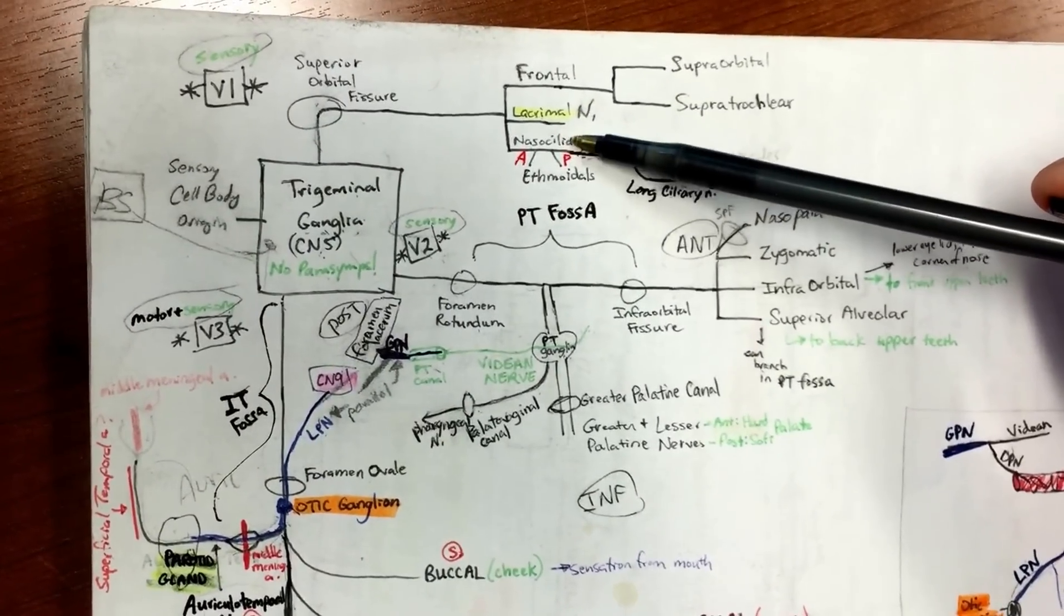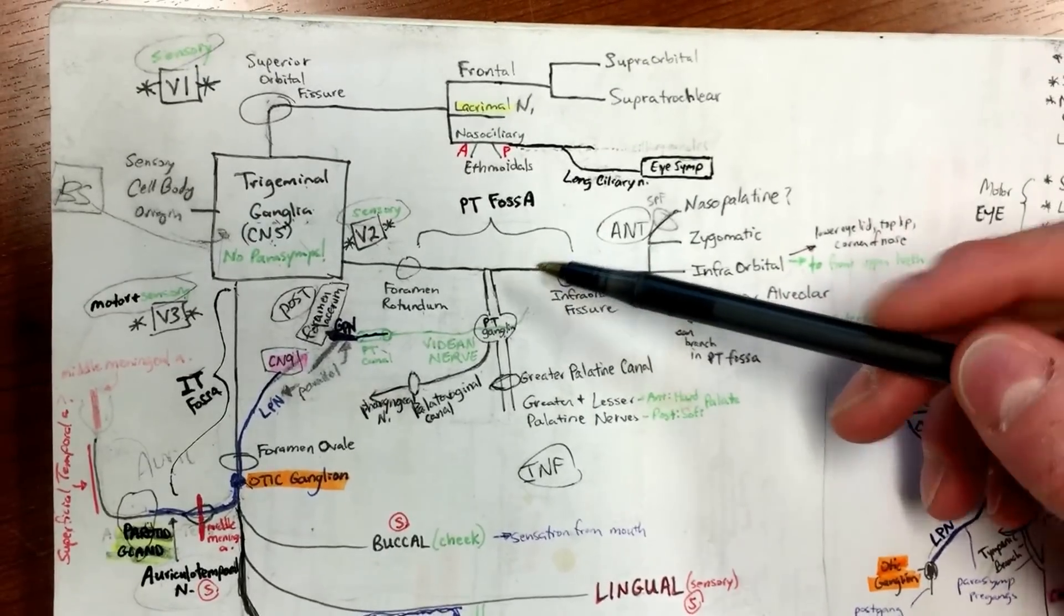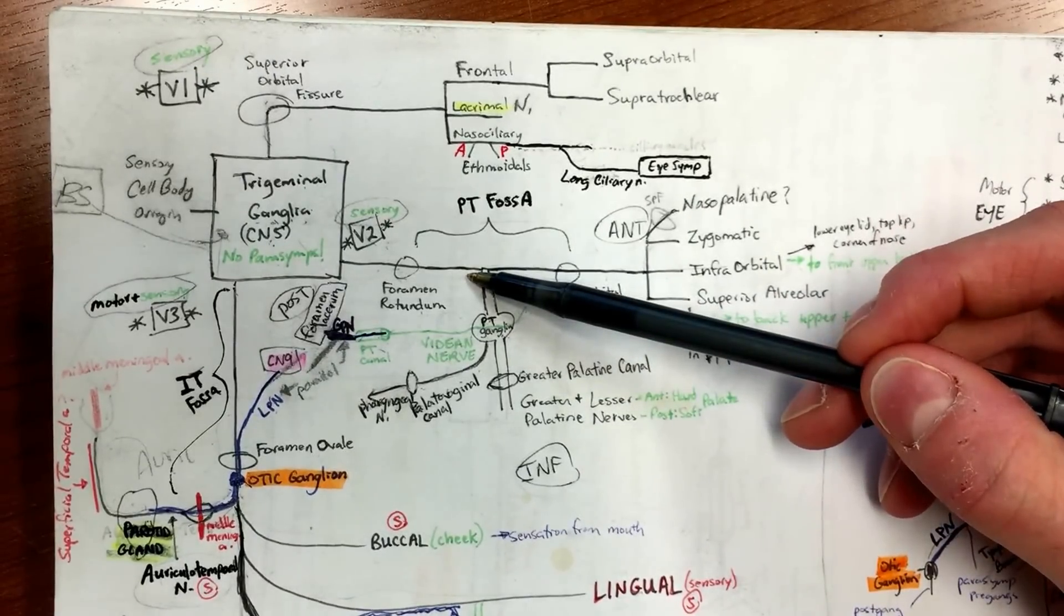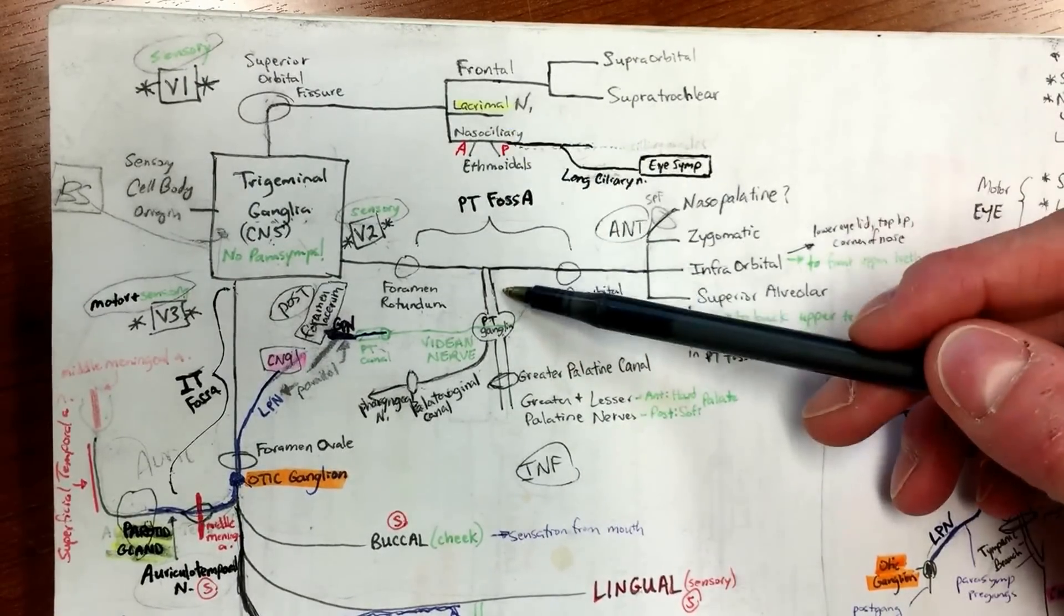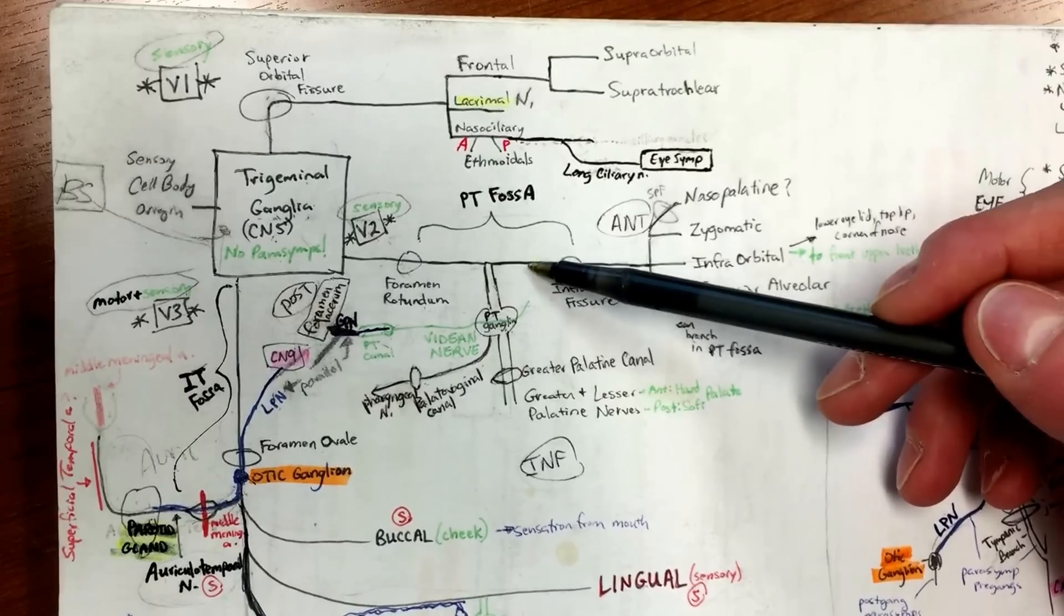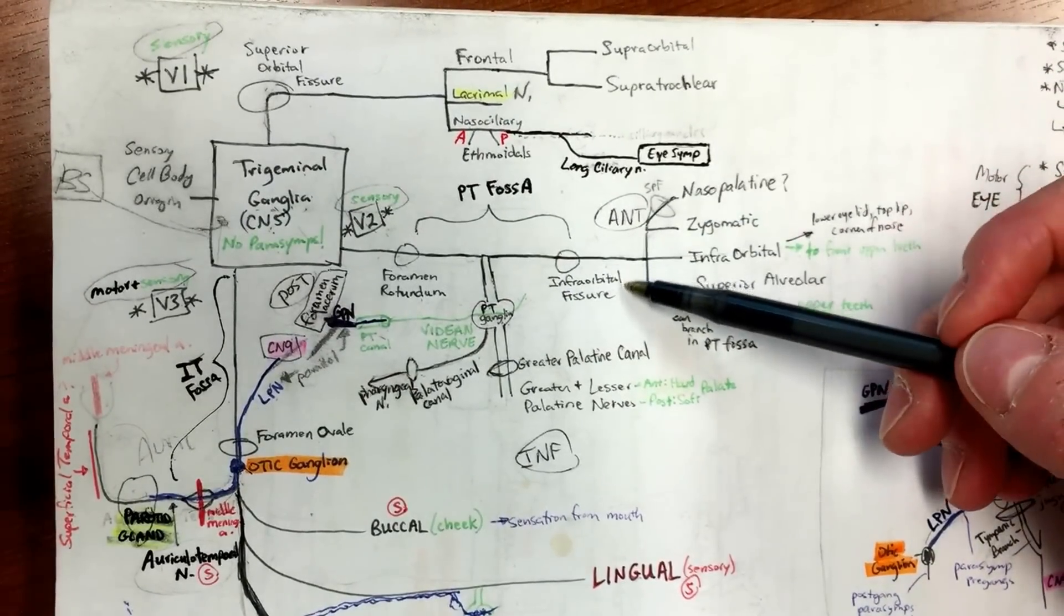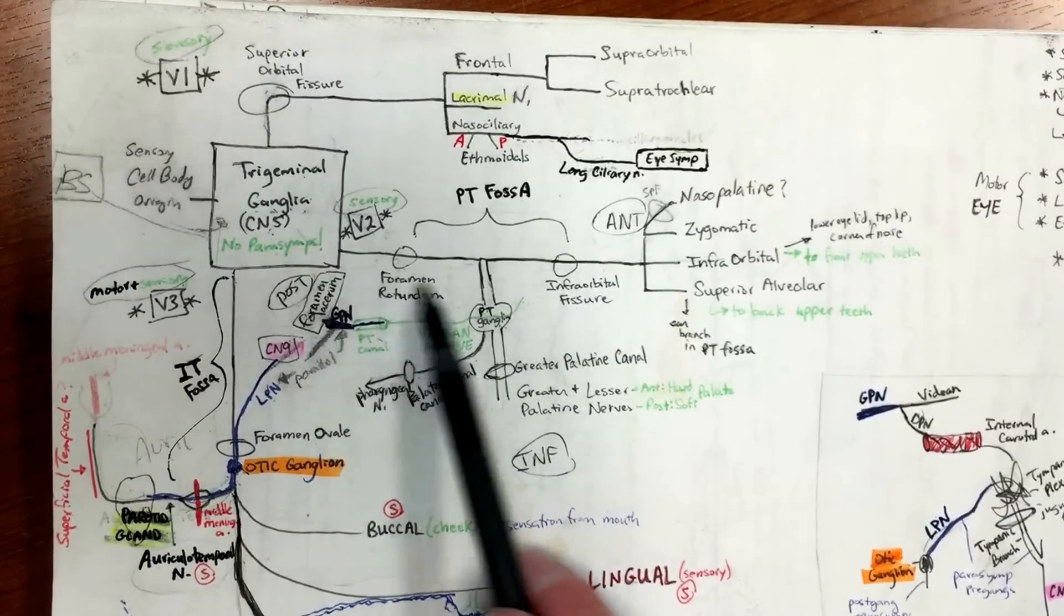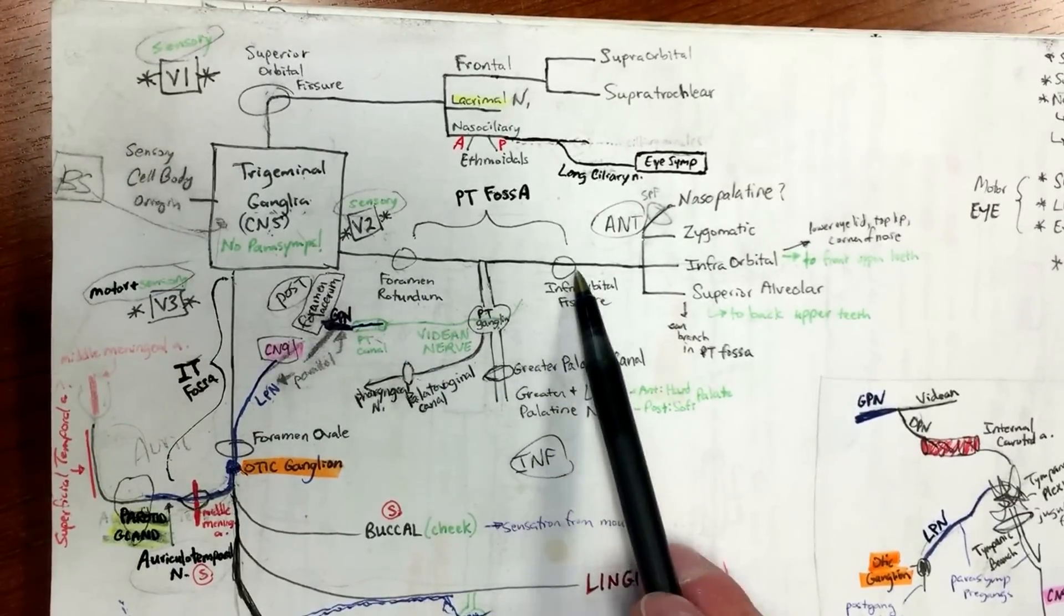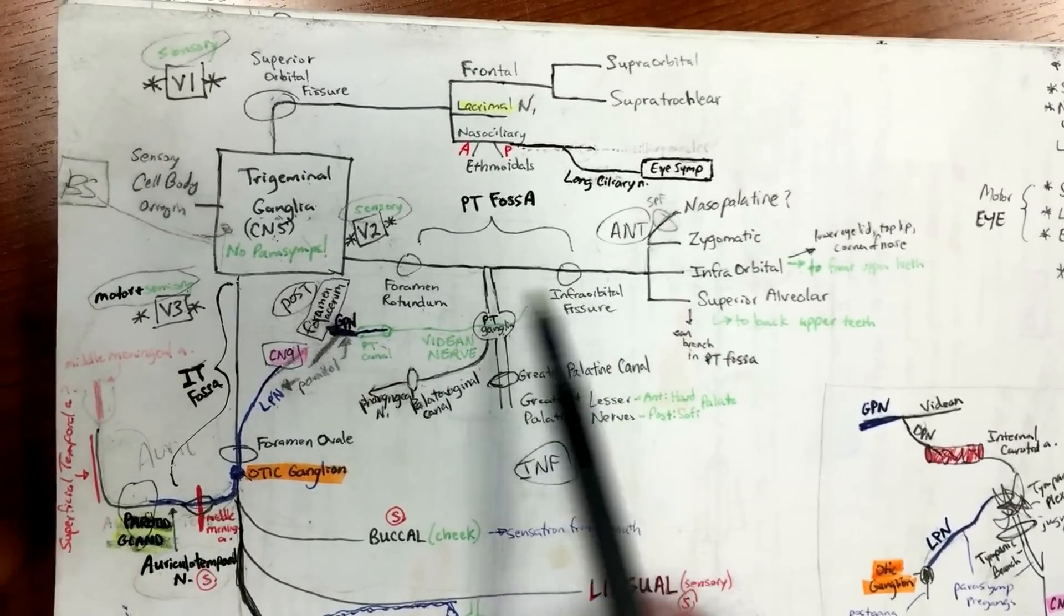Now we're moving down, nasal ciliary, and now we're doing V2. So V2 is also called what nerve? Maxillary nerve, right? So now we're moving down to the mouth, kind of the top of the mouth, lower eye area.